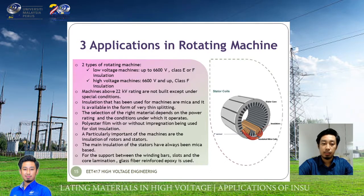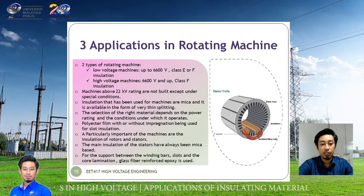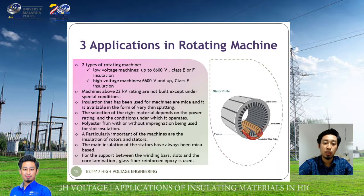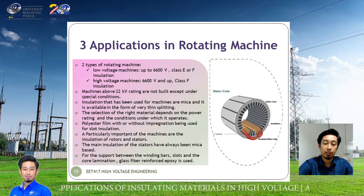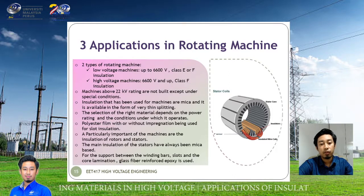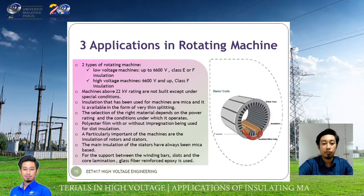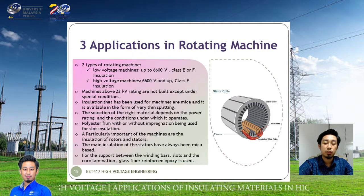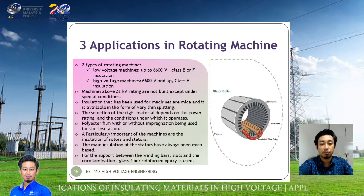They have two types of rotating machine. For the first, the low voltage machine — up to six thousand six hundred volts or 6.6 kV — which uses Class E or Class F insulation. For the high voltage machine, from 6.6 kV and above, Class F insulation is used.